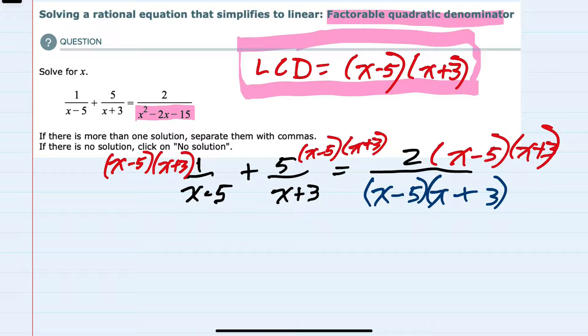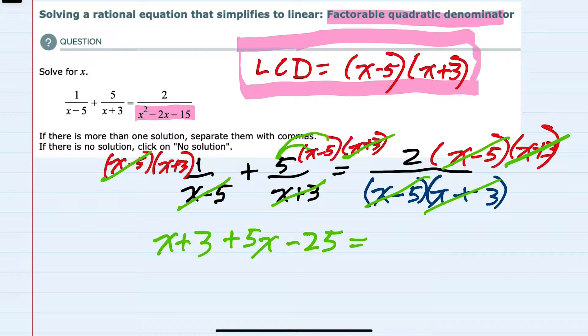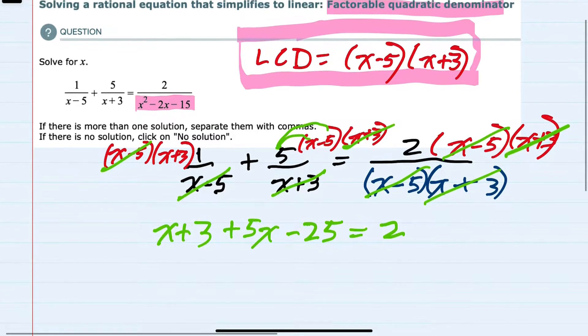And this is where things will start to simplify, because in that first term, the x minus 5s are going to cancel, leaving me with 1 times x plus 3, which is just x plus 3. In the second term, the x plus 3s cancel, leaving me with a positive 5 times x, 5x, and a positive 5 times minus 5, or a minus 25. That's our new left-hand side. On the right-hand side, everything is canceling in the denominator, and so I'm left with just 2. So we have done a bit of work, but we've now simplified things to an expression that's much easier to solve.